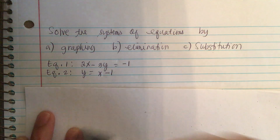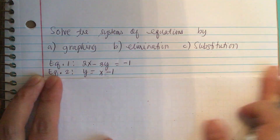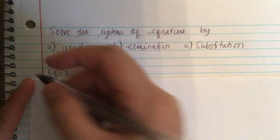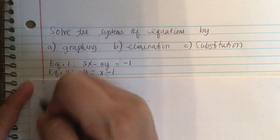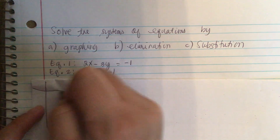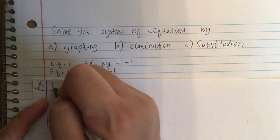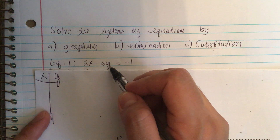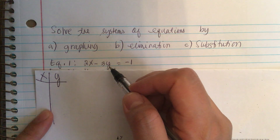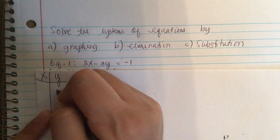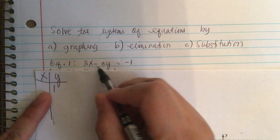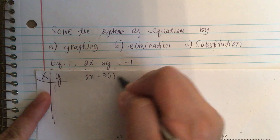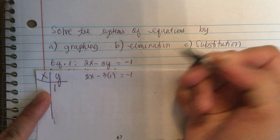We make our table to graph the first equation first and make points. So, x and y. When y is equal to 1, we solve for x. We have 2x minus 3 times 1 equals negative 1.